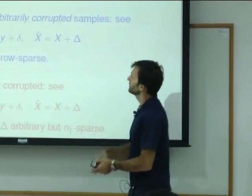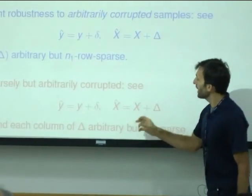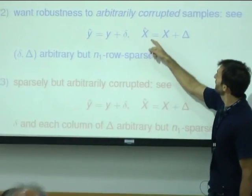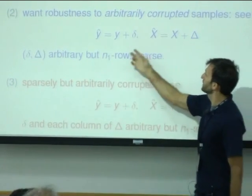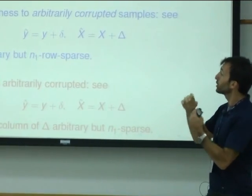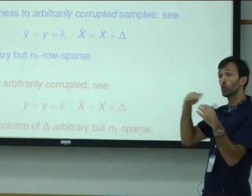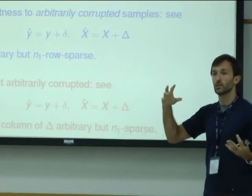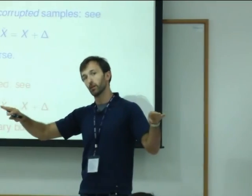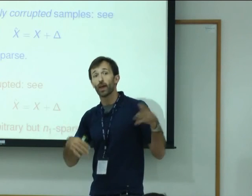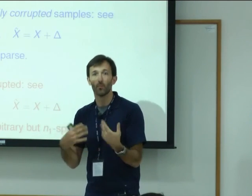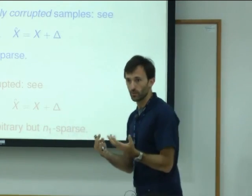And then a third is an even more difficult one, where now, looking at this model where we get to see X plus cap delta and Y plus little delta, capital delta and little delta are no longer going to be required to be row sparse, but just sparse. So instead of having N1 rows completely corrupted, every column of X is going to have N1 entries corrupted. So that's certainly a more powerful adversary than the other one.